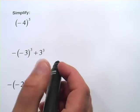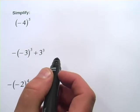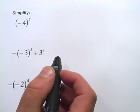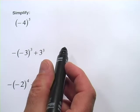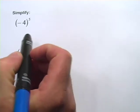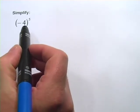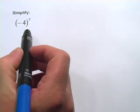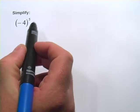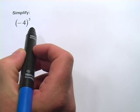In these next problems, we're looking at raising negative numbers to powers. There are a couple of rules you need to keep in mind here. In this first one, we have a negative 4 inside parentheses, and all of that is being raised to the fifth power.